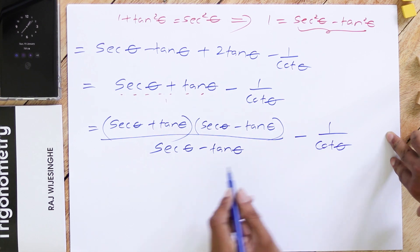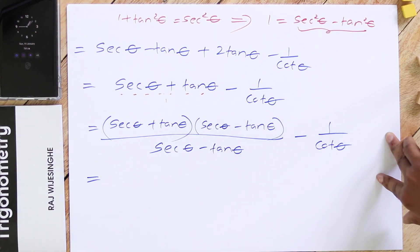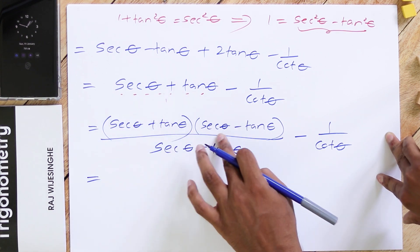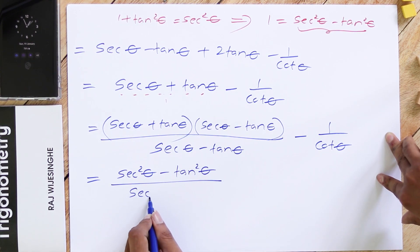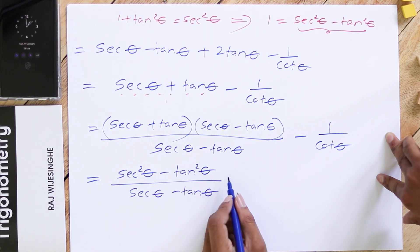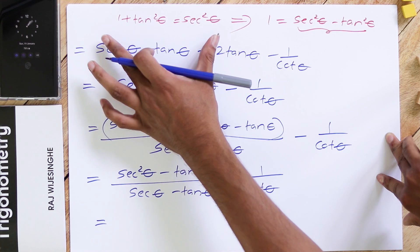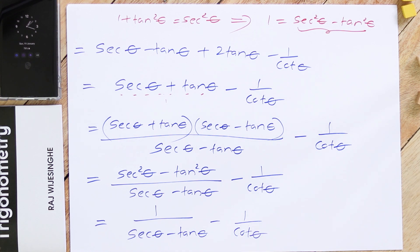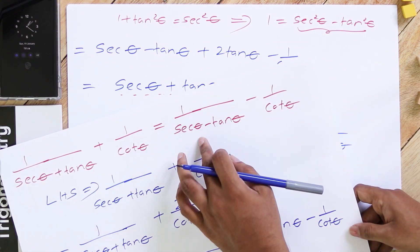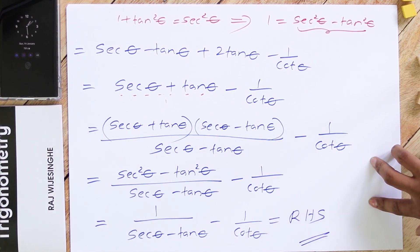sec θ + tan θ times sec θ − tan θ is a difference of squares: (A+B)(A−B) = A² − B², so it equals sec²θ − tan²θ over (sec θ − tan θ), minus 1/cos θ. But sec²θ − tan²θ = 1 from our basic trigonometric identity. So we can write 1/(sec θ − tan θ) − 1/cos θ. This is exactly what we were supposed to prove — it equals the right hand side, so we have proved this trigonometric identity.